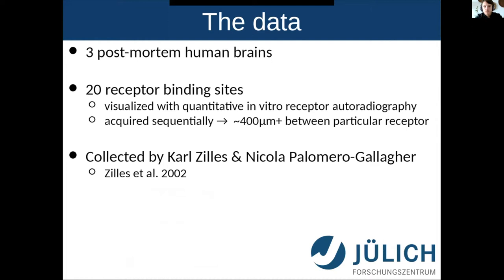The data I'm going to talk about comes from three post-mortem human brains, each visualized for 20 different receptor binding sites using in vitro receptor autoradiography, acquired sequentially. This is very important: your first section might be for benzodiazepine, then you go another 20 sections before getting back to another benzodiazepine section. So there's at least a 400-micron gap between sections of any particular receptor type. This data was collected by Karl Zilles and Nicola Palomero-Gallagher.